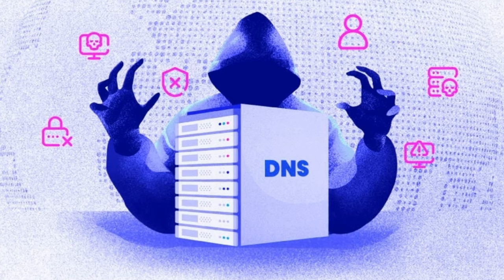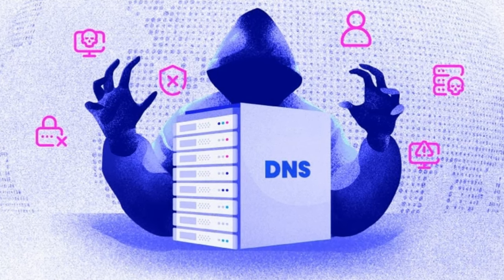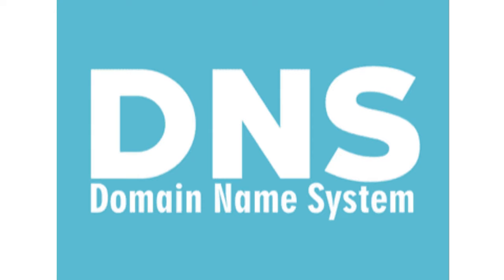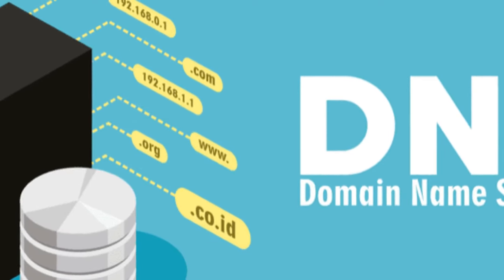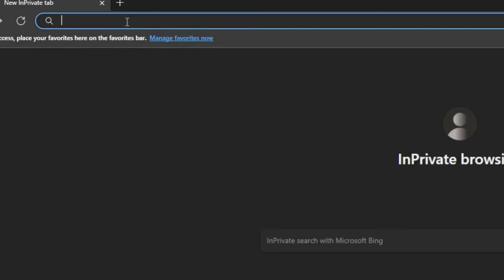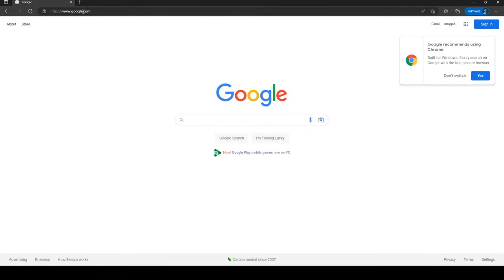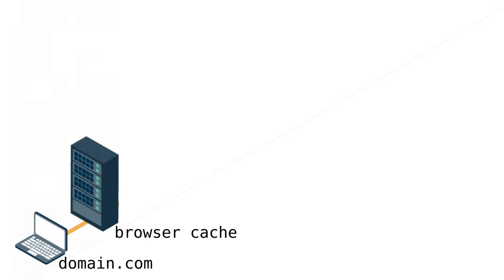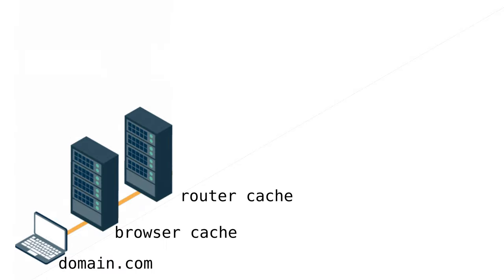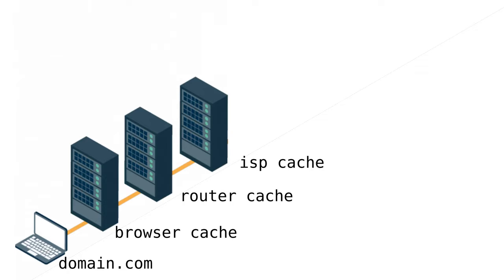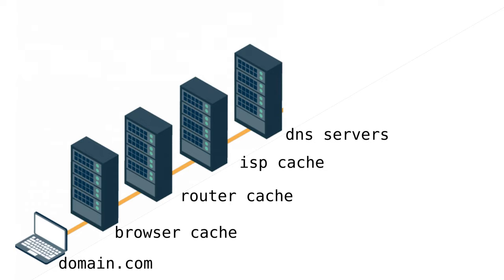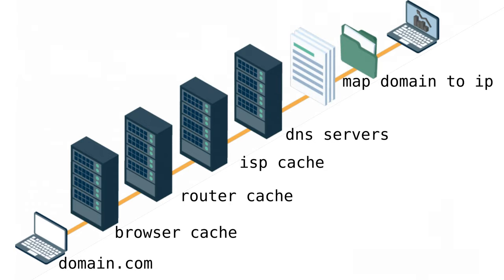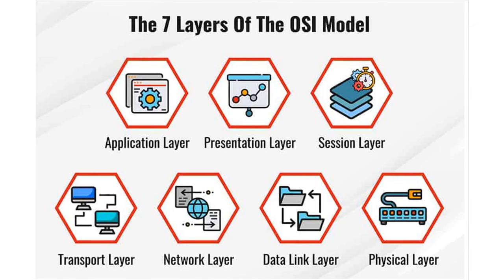Explain DNS. Make sure to remember what port it's on — I made the mistake of not knowing. It's port 53. Commit that to memory. It's domain name system. Be sure to explain in a bit of depth how it works. When you put a URL in your browser, it checks the browser cache for any known information, then goes to your router cache, then your ISP cache, and if it doesn't exist there, it queries one of the many DNS servers across the world to locate the actual IP address.